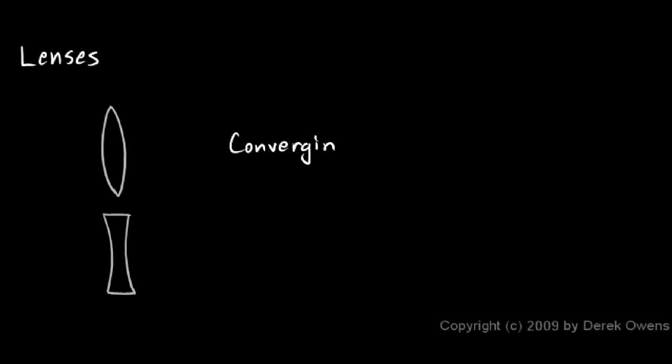Now we'll say a few things about lenses and the basics of how they work. There are, broadly speaking, two types of lenses. A converging lens, like you see here, is called a converging lens because it will cause incoming parallel rays of light to converge. If you have a ray of light coming in like this and like this, these light rays will bend as they go through the lens.